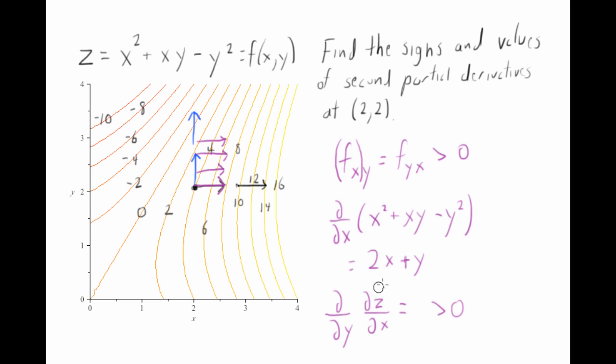I'm taking the derivative with respect to y of this. What do I get? Well, the derivative with respect to y is just going to give me 1. It is positive. I just had the wrong number before.